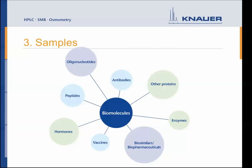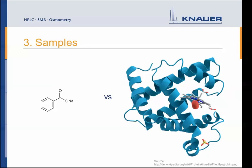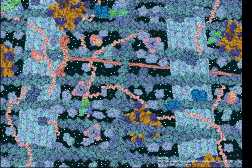The third point concerns the samples. In FPLC we usually purify biomolecules — peptides, nucleotides, and the biggest group: proteins. Another difference from HPLC is that FPLC works with very large biomolecules, whereas HPLC works with small chemical compounds. These proteins are in most cases purified out of the cell. Looking at a picture of an intracellular space, you can see it is very crowded — there are a lot of proteins and other compounds like DNA, RNA, and cellular membranes. The challenge is to purify your protein of interest out of this cellular space.